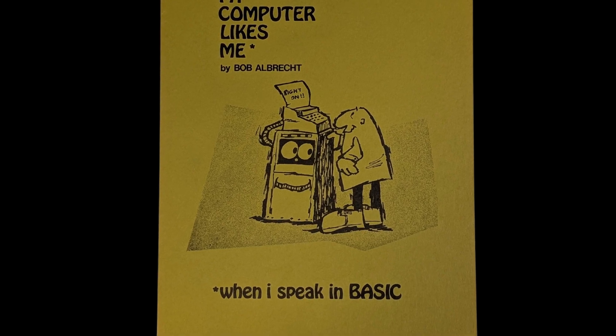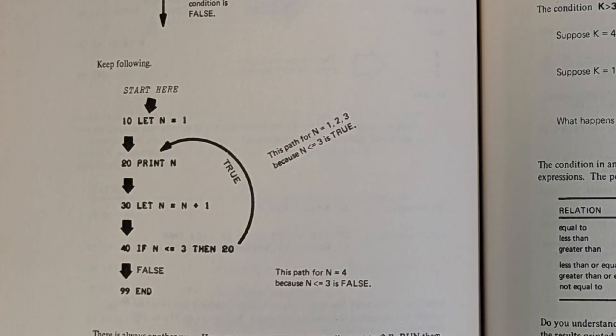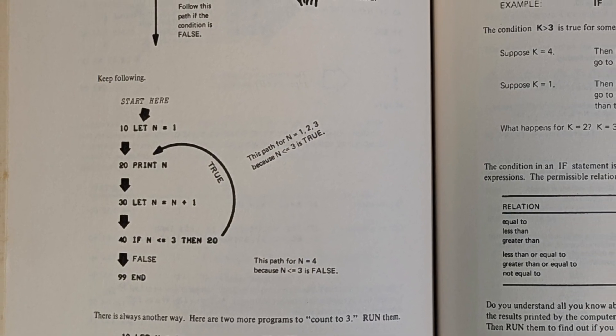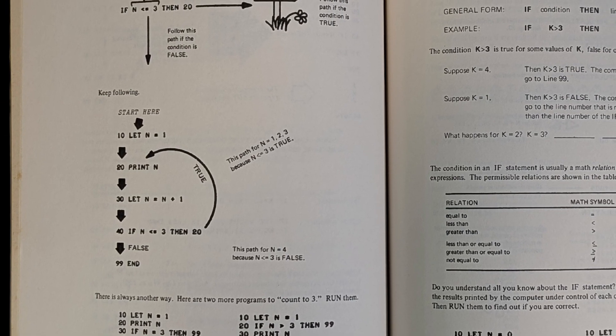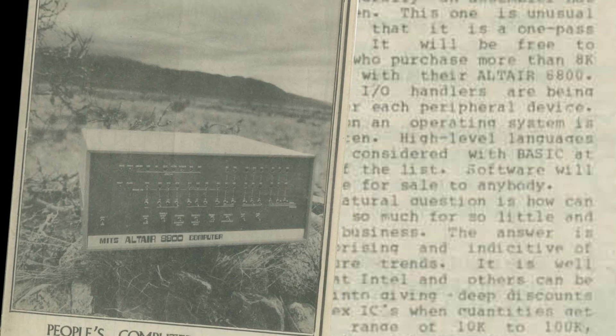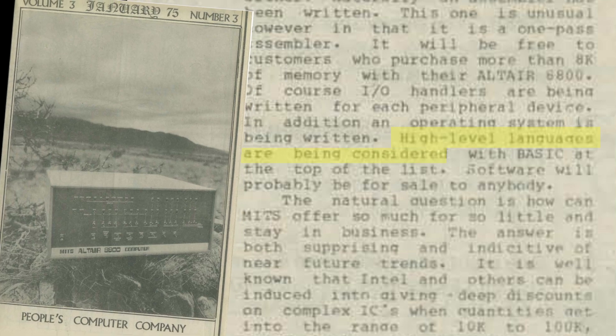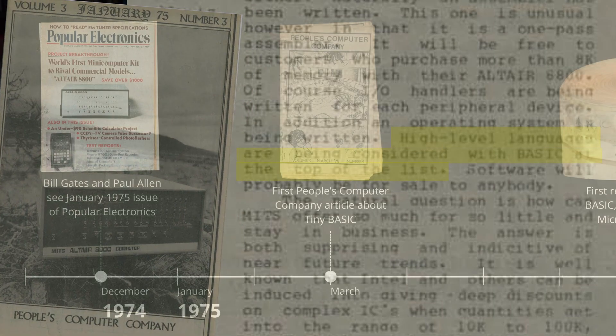Why BASIC? BASIC was an easy-to-learn general-purpose programming language that was becoming popular in universities and schools as an introduction to teaching about computers and programming. It was simple, interactive, and perfect for the kind of hobbyist machines they envisioned. But Gates and Allen weren't the only ones thinking this way. The People's Computer Company, which was a hugely influential hobbyist group back then, saw the same magazine. Their January 1975 newsletter noted that, for the Altair, high-level languages are being considered, with BASIC at the top of the list.